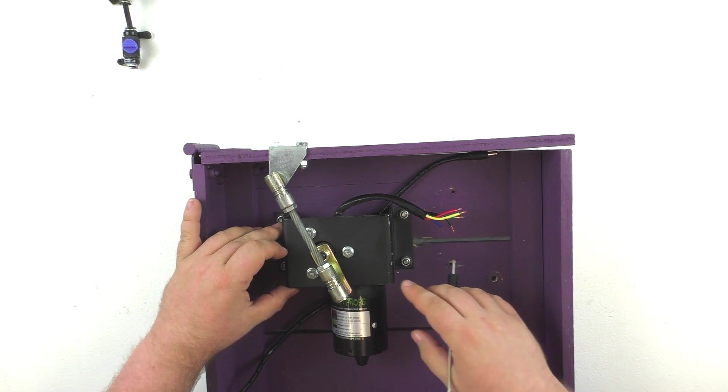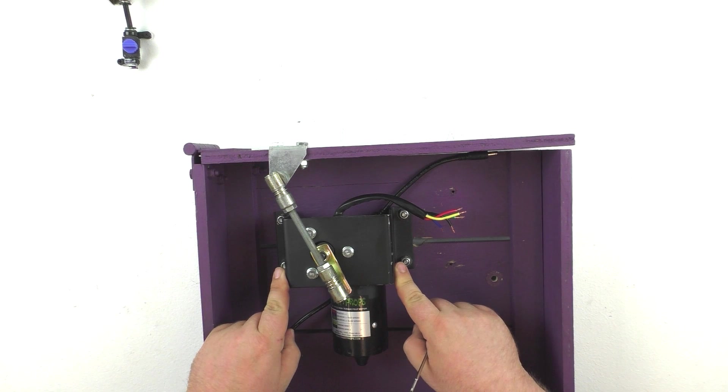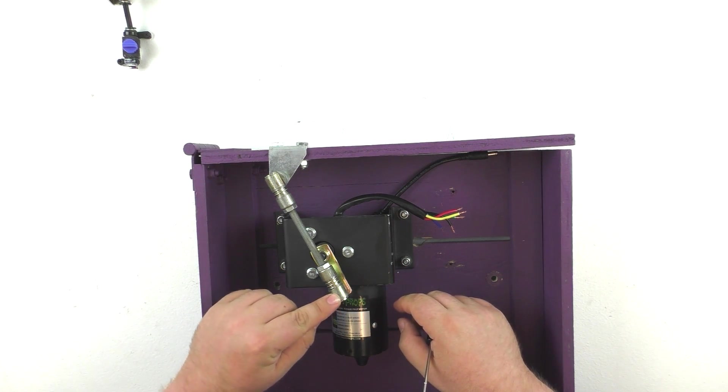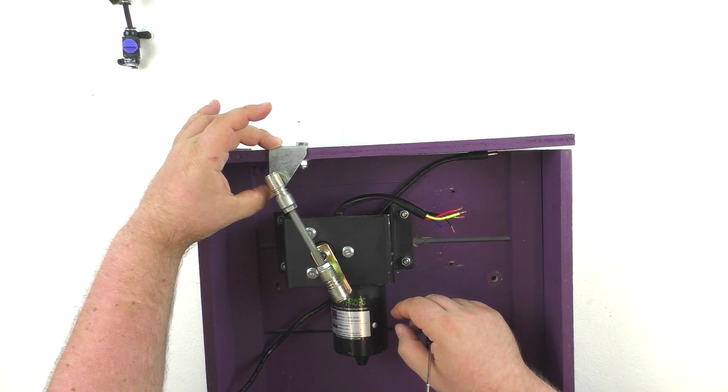When you order the mech, it's going to come with the motor itself, the inverted bracket, as well as this linkage, and the bracket that mounts to the lid.